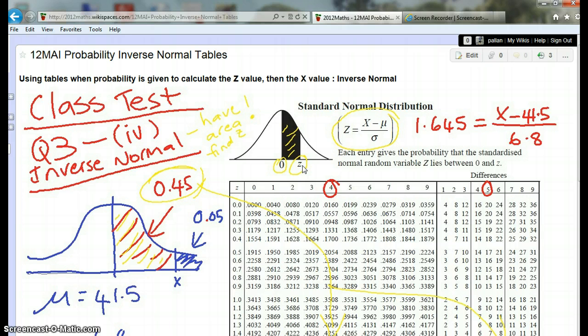What you have to do is first interpret the question and decide what that shaded area would be. For example, if that's 0.05, then this X value would have 5% above it and 95% below it.